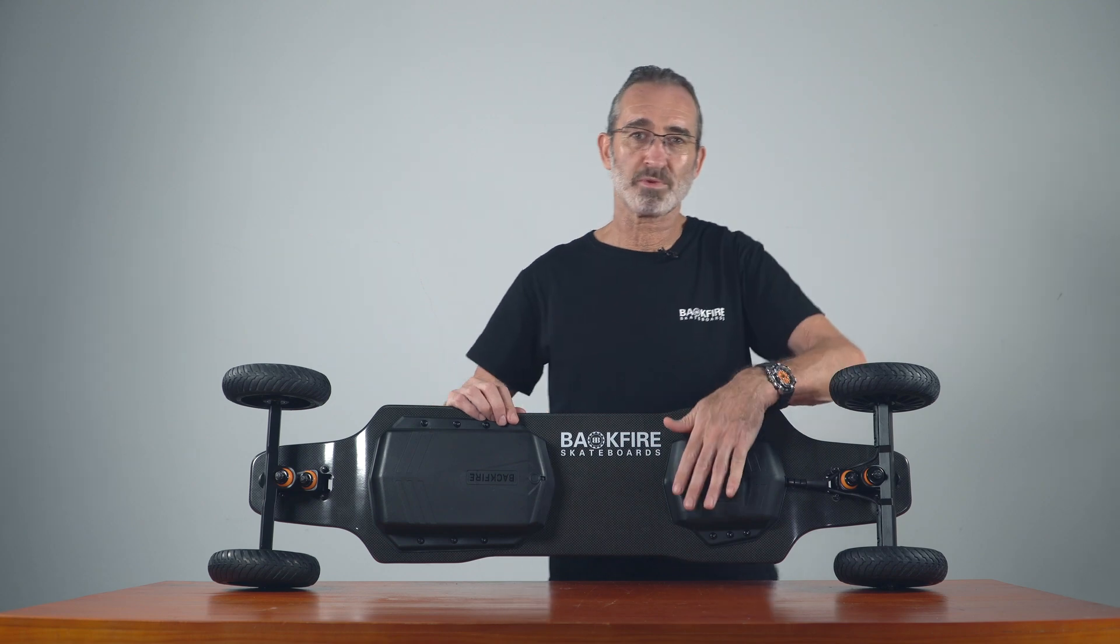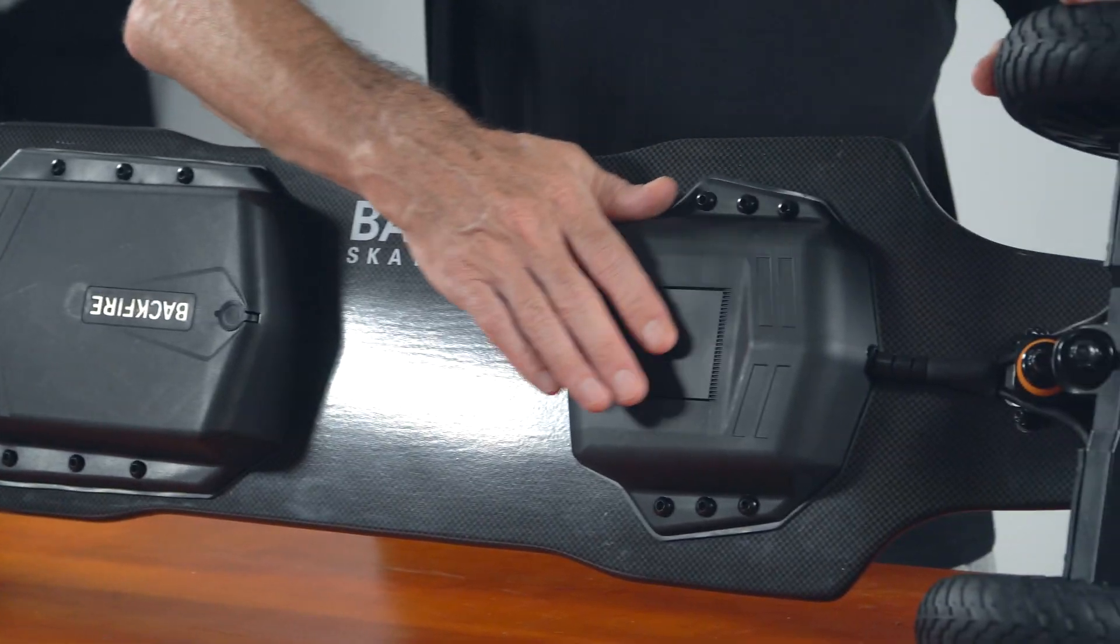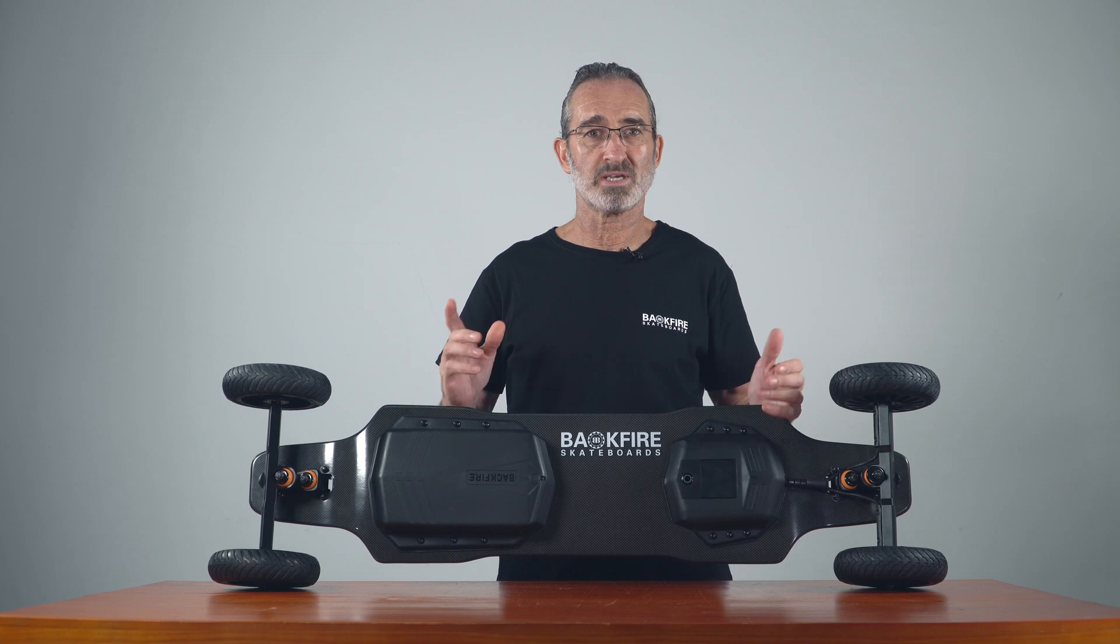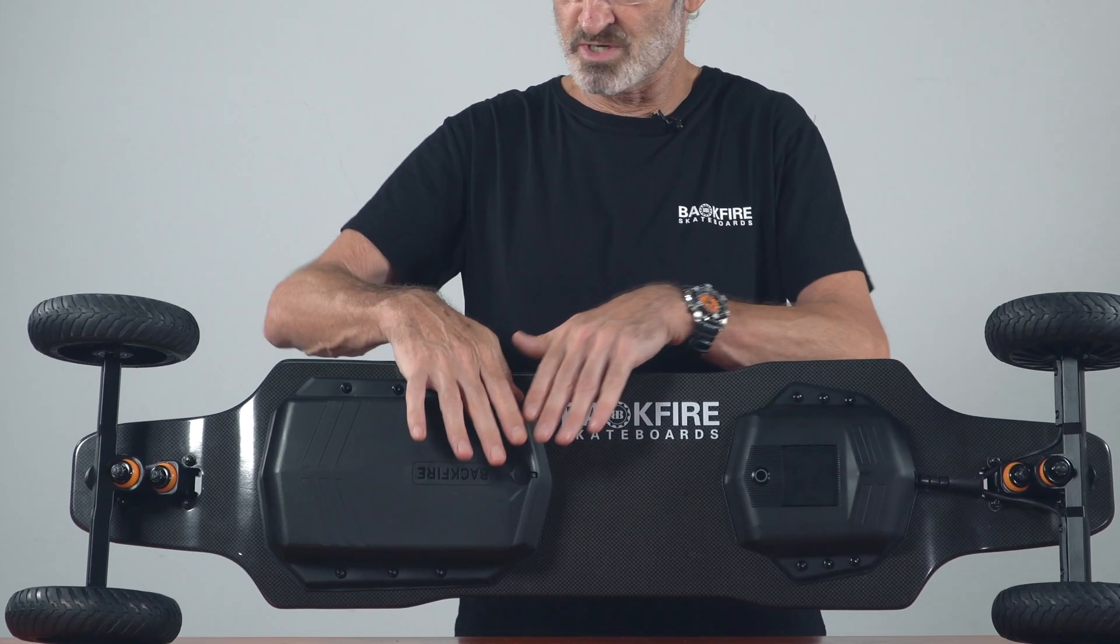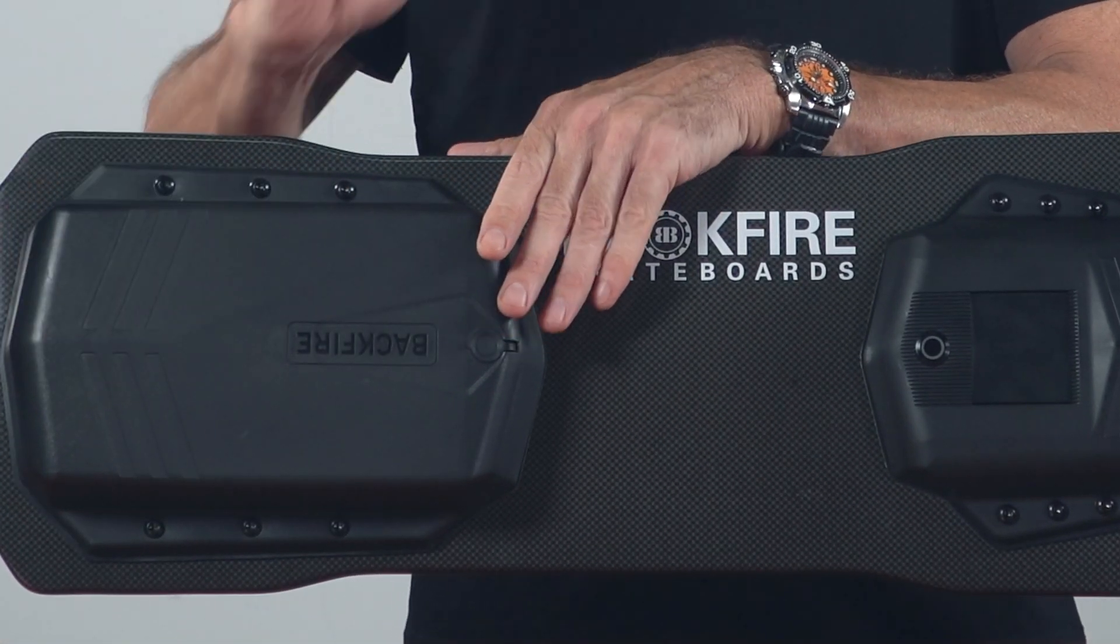The newly designed Hobbywing 12S high voltage ESC can now be modified by DIY e-board enthusiasts, meaning when you open the battery enclosure, there are two ports available.